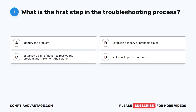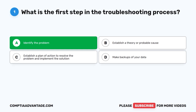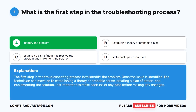The correct answer is A. Identify the problem. The first step in the troubleshooting process is to identify the problem. Once the issue is identified, the technician can move on to establishing a theory or probable cause, creating a plan of action, and implementing the solution. It is important to make backups of any data before you make any changes.